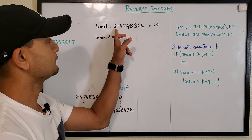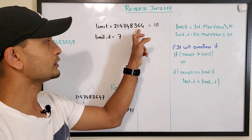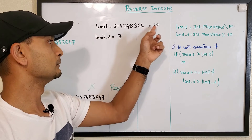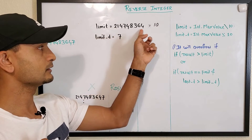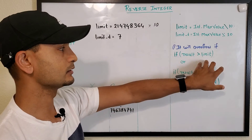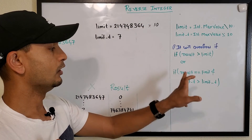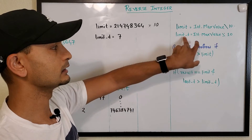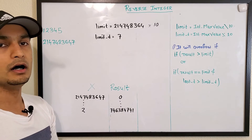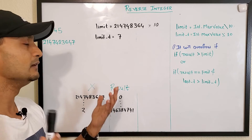There is one more edge case: if result equals exactly 214748364, we need to additionally check the incoming last digit. If the last digit is 7 or less, we can safely multiply by 10 and add it. But if result equals limit and the last digit is greater than 7 — meaning 8 or 9 — overflow will occur, so we return zero. Those are the two overflow conditions.